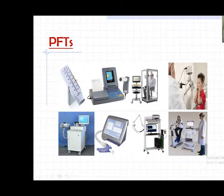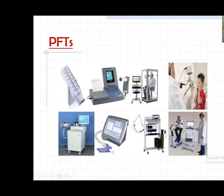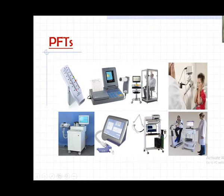Body plethysmography is used to measure functional residual capacity and residual volume, among other static volumes. There is also cardiopulmonary exercise testing, which helps differentiate whether breathlessness is related to the heart or the lungs. Similarly, helium dilution is another method. Our talk will be restricted to two basic gadgets: the peak flow meter and the spirometer.